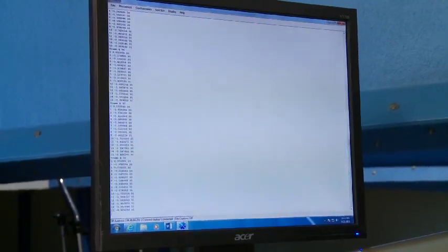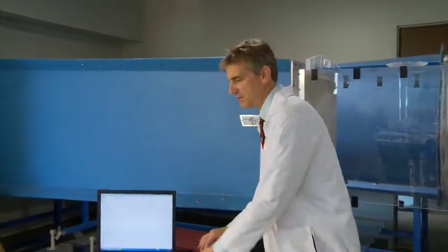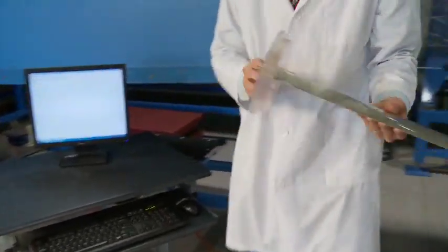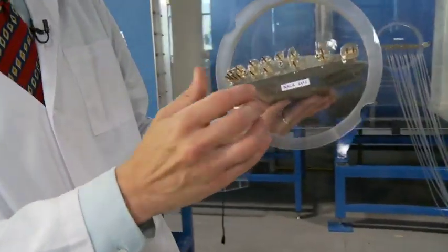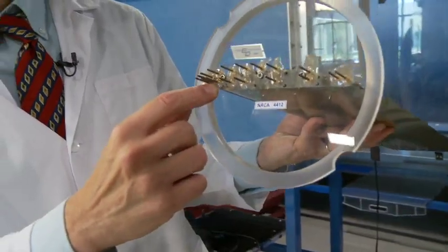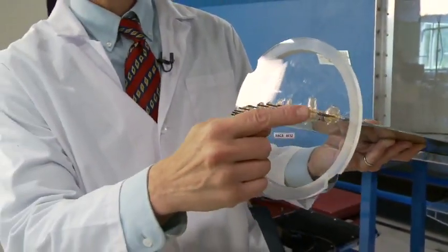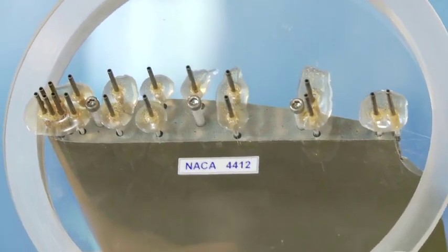So before we get started I thought I'd take a second to talk about the airfoil section itself. This is a NACA 4412. So you can see the cross section of the airfoil.